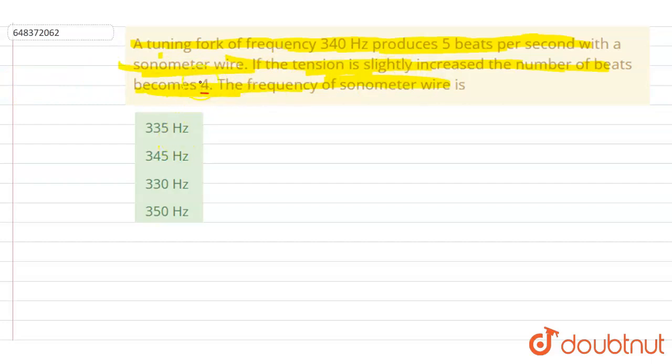We know that in a wire, the velocity depends on tension, so frequency is directly proportional to square root of tension (f ∝ √T). If the tension is slightly increased,